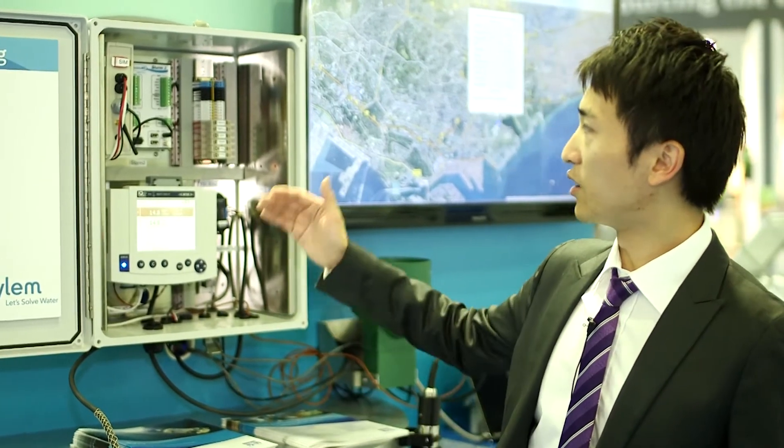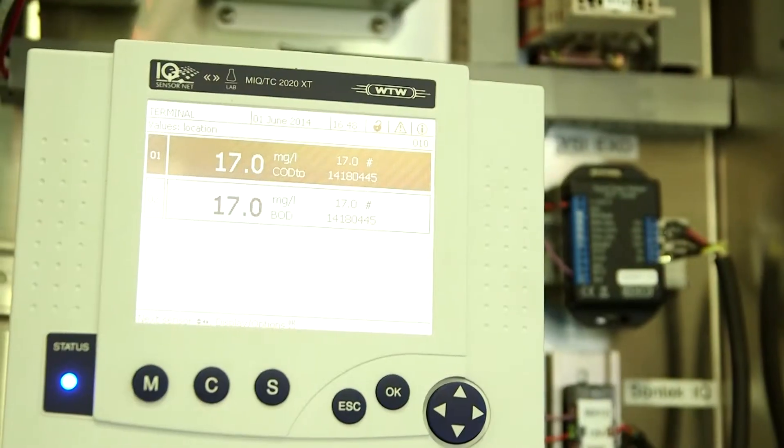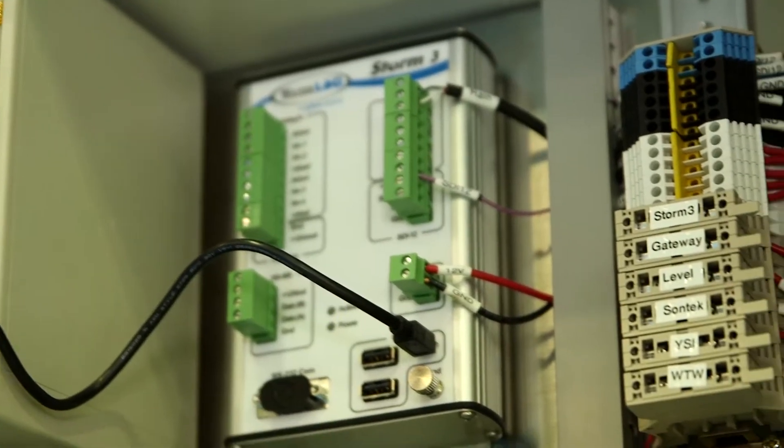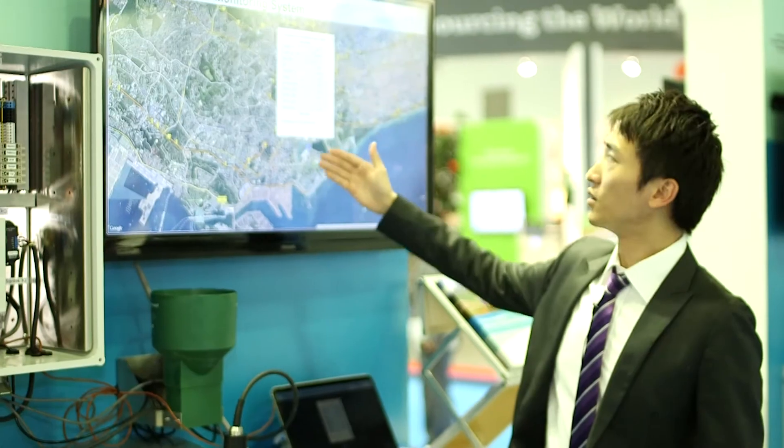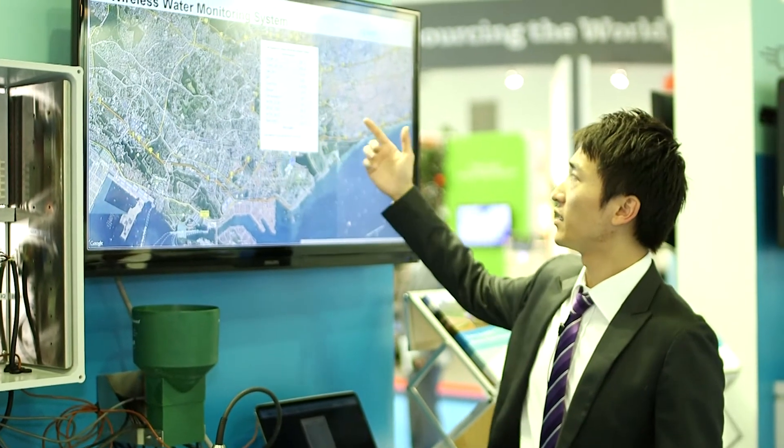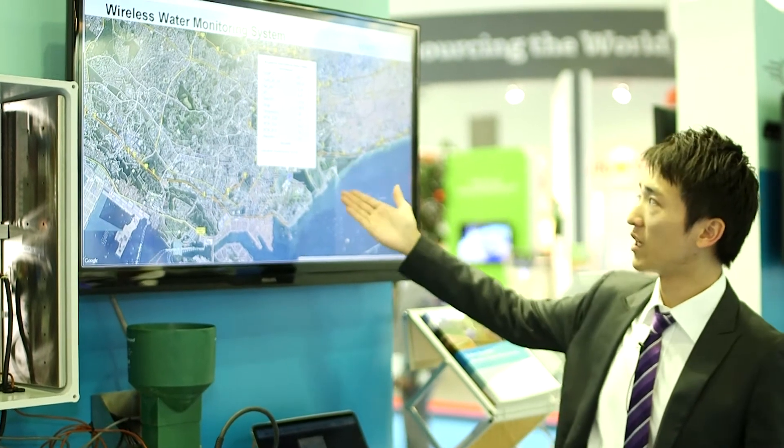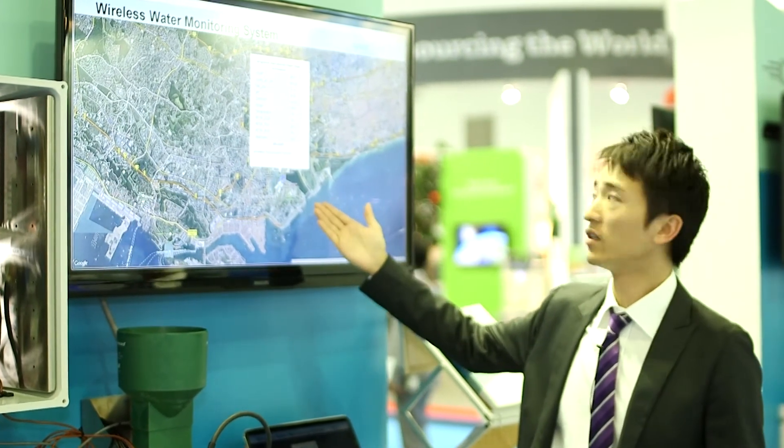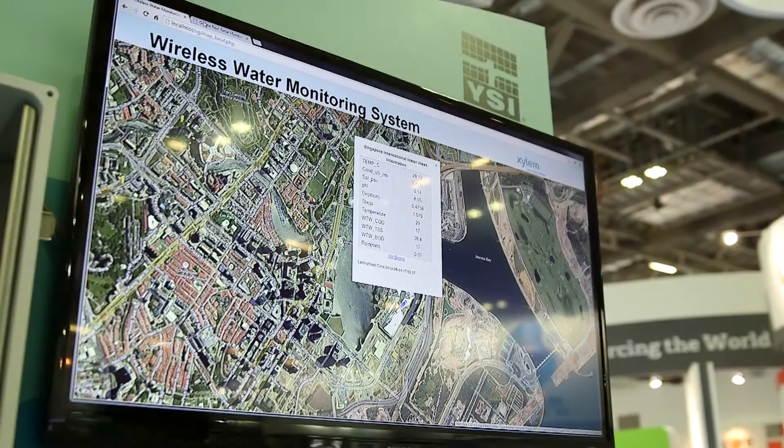So we collect the data from the sensor and then using the monitoring station to send the data back to a server where we can go into the website to see the data. And here you can, for example, you can see the pH level, temperature, and COD, BOD readings real time.